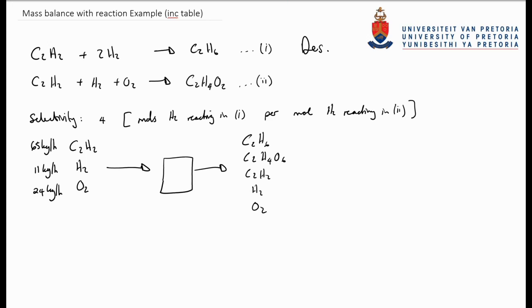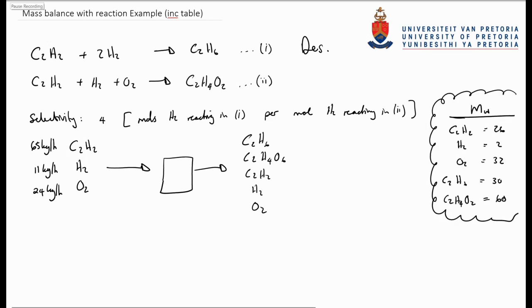Before we can start the mass balance, we first need to get the additional information that we are short. The only additional information we need to solve this mass balance is the molecular mass of the species, as indicated here.